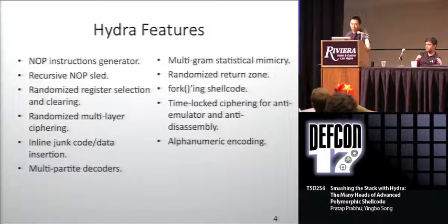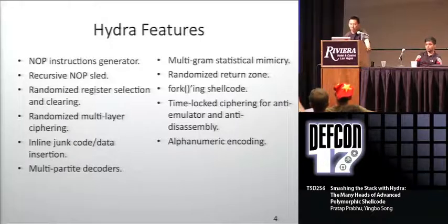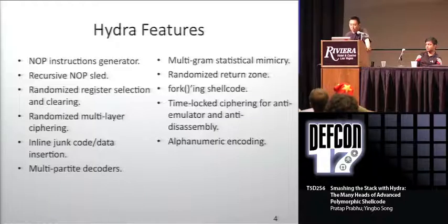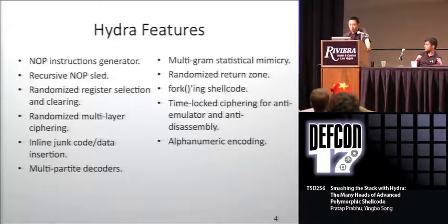Here's a listing of Hydra's features: a no-op instruction generator, recursive no-op sleds, randomized register selection and clearing, randomized multilayer ciphering, junk code and data insertion, multi-partite decoders — where we break the decoder into pieces and insert it into the payload itself — multigram statistical mimicry using machine learning techniques to make shellcode look like normal traffic, randomized return zones, forking shellcode so the vulnerable process continues executing, time-lock ciphering for anti-emulator and anti-disassembly, and alpha-numeric encoding to push shellcode into printable character range.